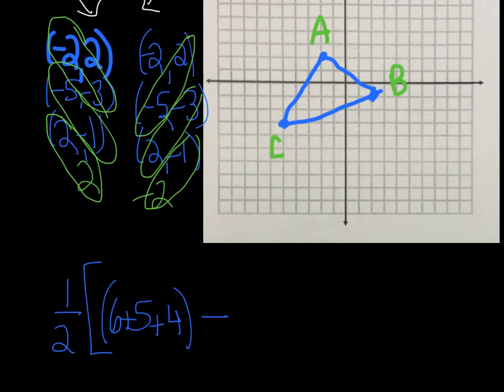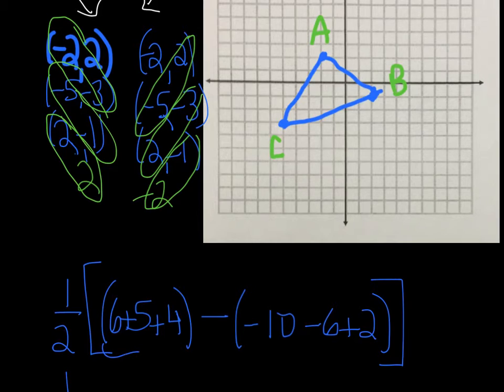Now we're going to subtract from that the products on this side. 2 times negative 5 is negative 10. Oops, we need a pen. Negative 10. Then we have negative 3 times 2 is negative 6. And lastly, negative 1 times negative 2 is positive 2. Looks really big, but it's not so complicated. We'll bring down the 1 half. Inside of here, we get 15 minus, let's see what we get in here. We'll have negative 16 plus 2, which is negative 14. That will leave us with 1 half of, this becomes a plus, so 1 half of 29. And that's 14 and 1 half square units.